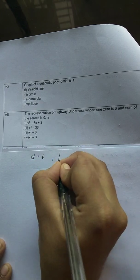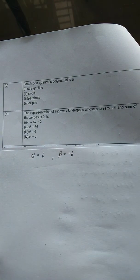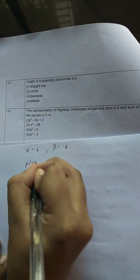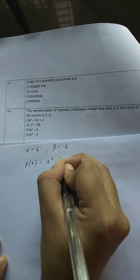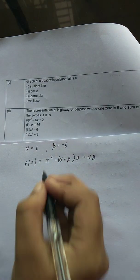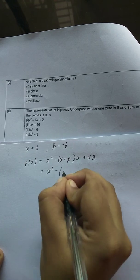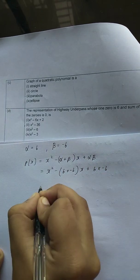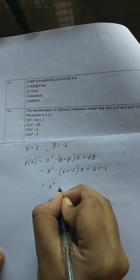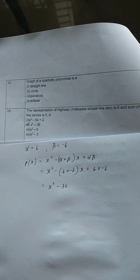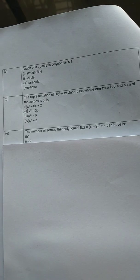Beta equals negative 6. We use the quadratic polynomial formula: p of x equals x squared minus alpha plus beta times x plus alpha times beta. Substituting: 6 plus negative 6 gives 0, and 6 into negative 6 gives negative 36. So the answer is the second option: x squared minus 36.